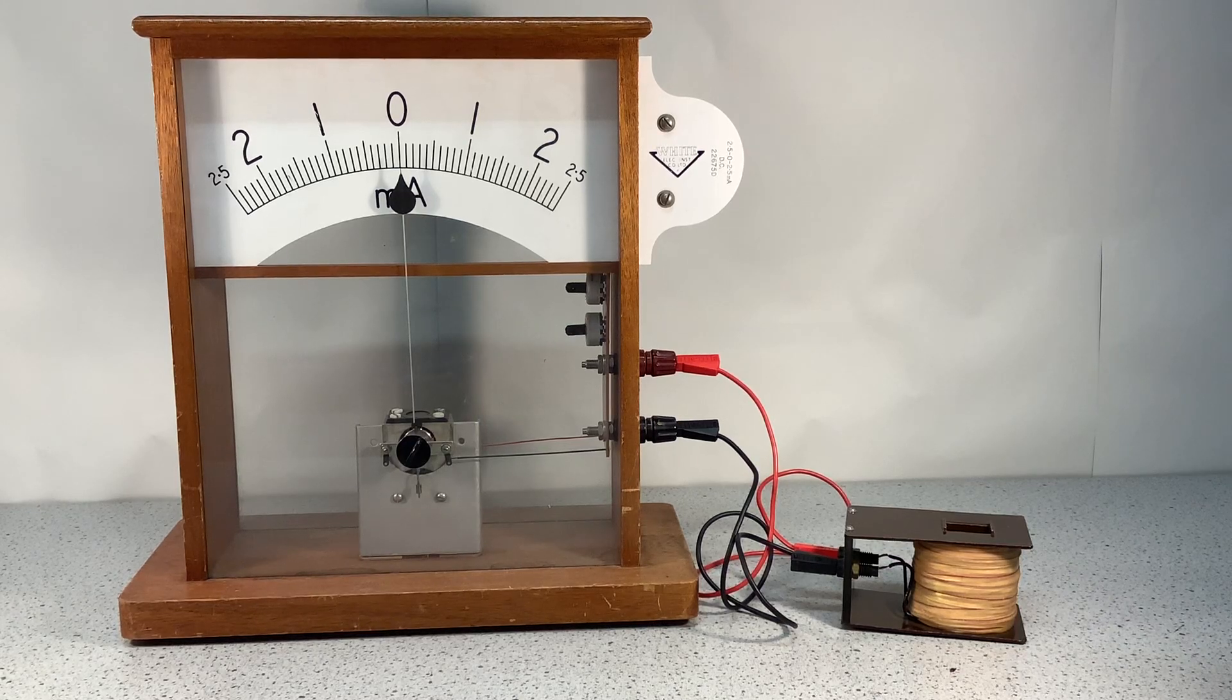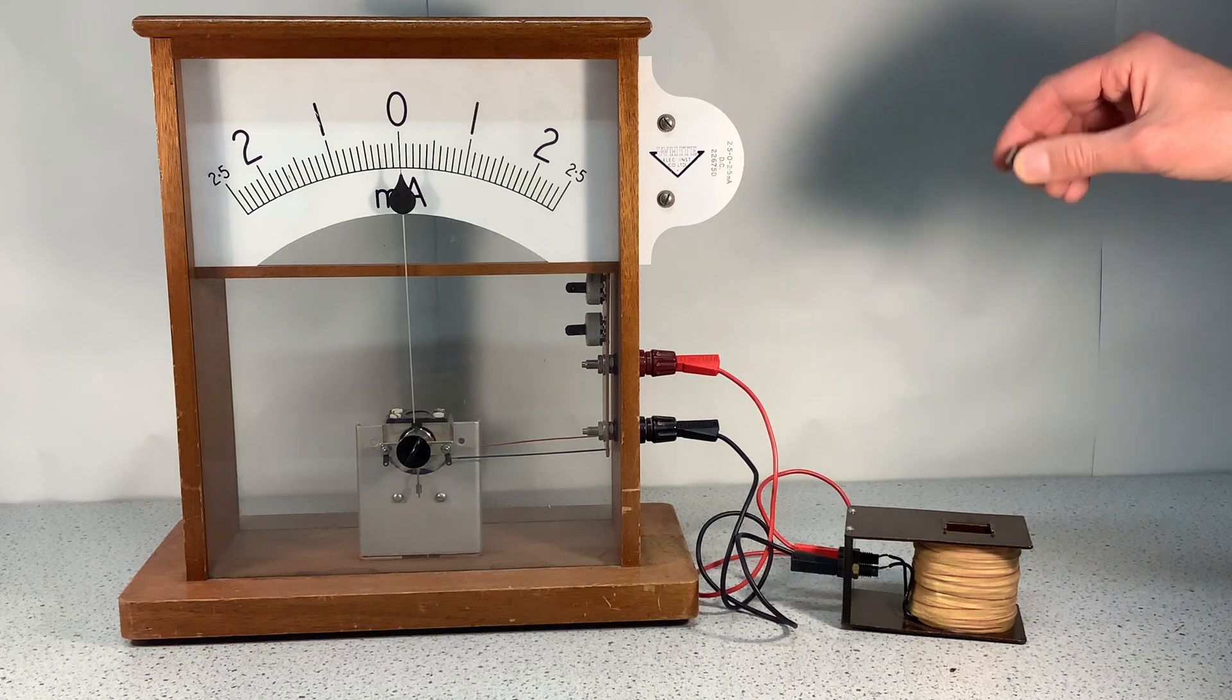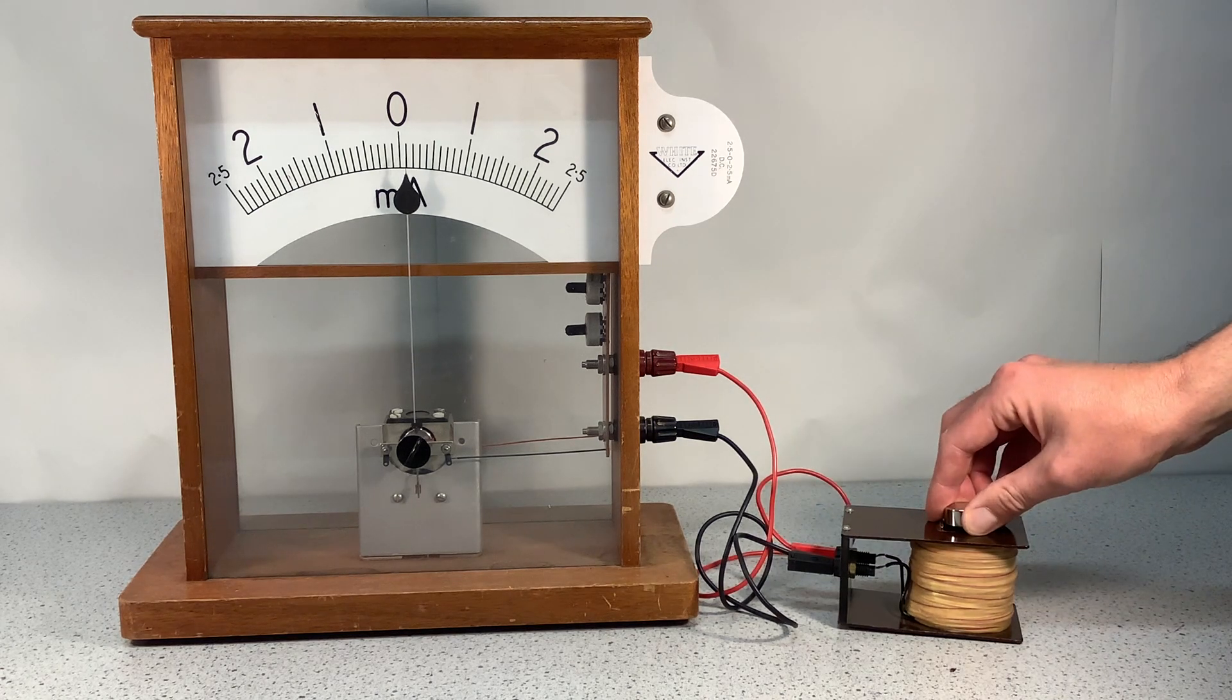Now I'm going to look at how you can change the direction of the induced potential difference and hence current. So the first way to do this is moving towards the coil.